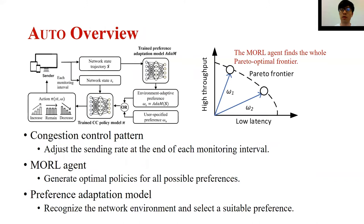Based on the above analysis, we propose AUTO. Like other reinforcement learning-based methods, it divides time into consecutive monitoring intervals. At the end of each interval, it adjusts the sending rates according to a MORL agent and the preference adaptation model. Instead of targeting a single Pareto-optimal result, the MORL agent targets finding the whole Pareto-optimal frontier so that it can generate optimal policies for all possible preferences. Meanwhile, the preference adaptation model automatically sets a proper preference for each environment by taking a state sequence as input to recognize the environment. By doing so, AUTO can cope with different environments and application requirements.